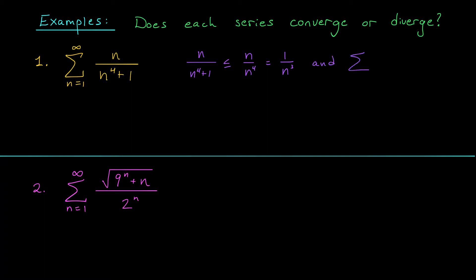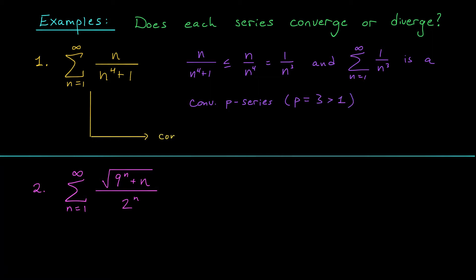The sum of one over n cubed from one to infinity is a convergent p-series — it's convergent because p equals three, which is bigger than one. So since this larger series converges, we conclude that our series must also converge by comparison. Pretty neat — we didn't have to use the integral test.